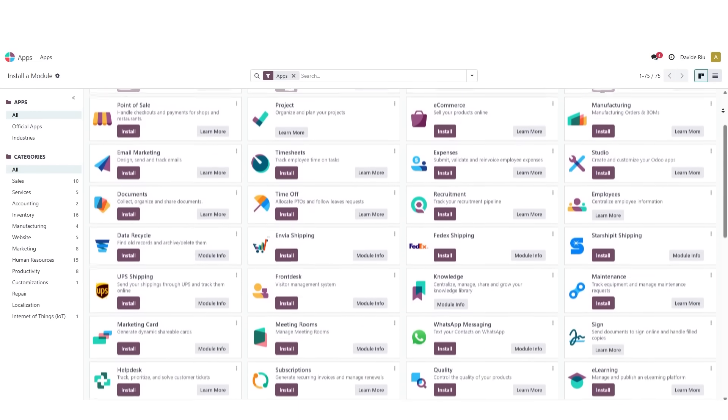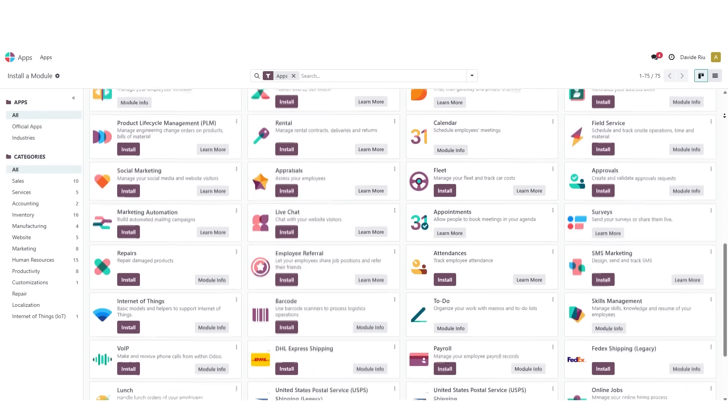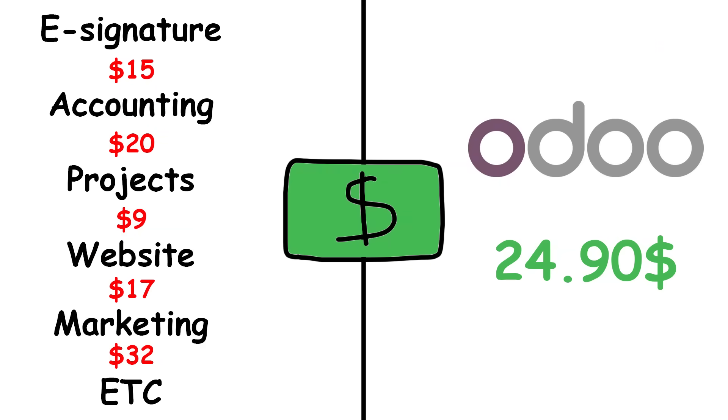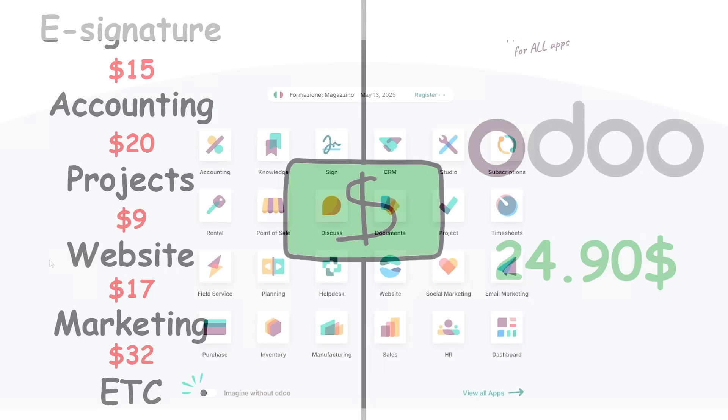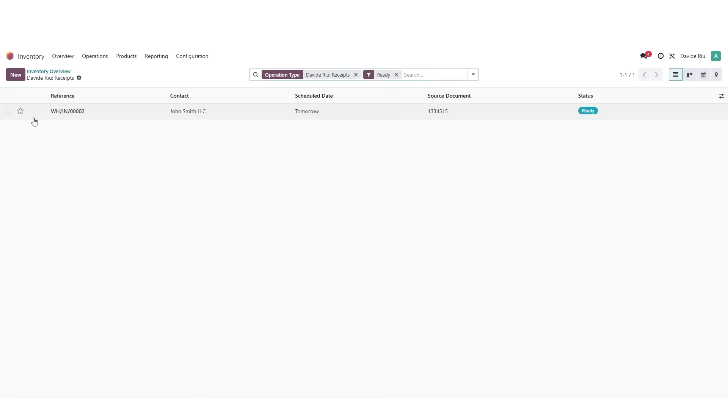Odoo is basically your all-in-one business console, offering dozens of tools in a single platform and under a single subscription. They're designed to be as intuitive as possible. So not only do you avoid paying for each tool separately, you also don't have to learn how to use each one individually. Let's take a look, for example, at their inventory tool.